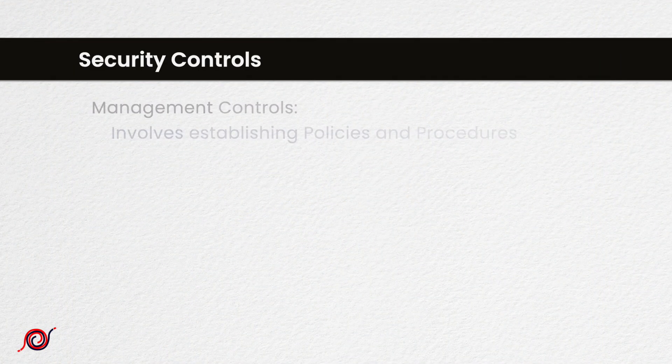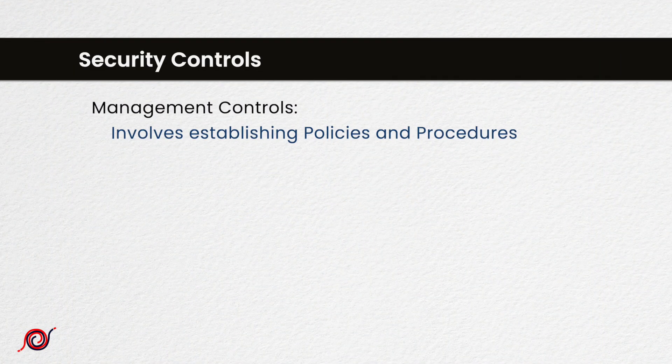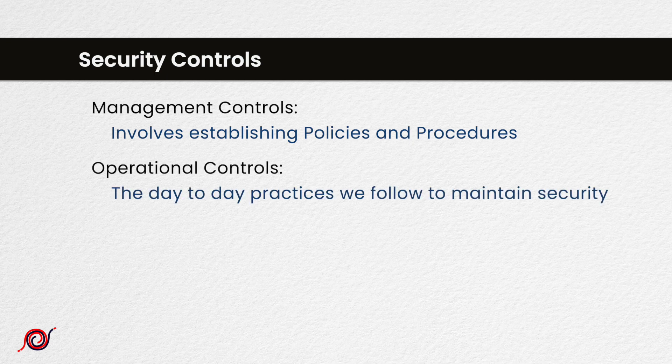Management controls involve establishing policies and procedures — they are like guiding principles that set the foundation of our security practices. Operational controls are the day-to-day practices we follow to maintain security. They include things like regular data backups and access management.